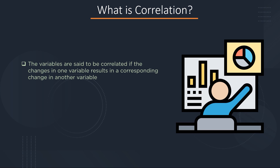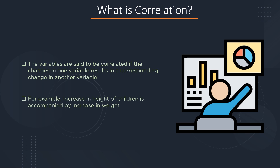What is correlation? Correlation refers to a statistical relationship between two entities. It measures the extent to which two variables are linearly related. For example, the increase in the height of children is often accompanied by an increase in weight. The value of the correlation always lies between minus 1 to plus 1.